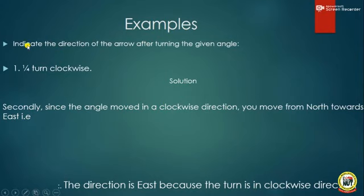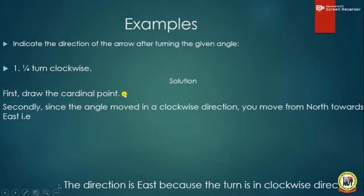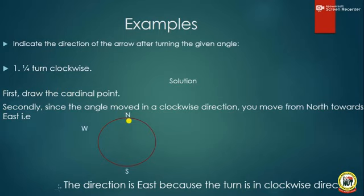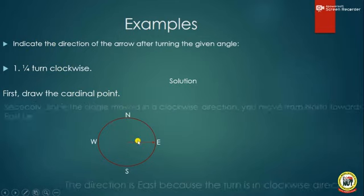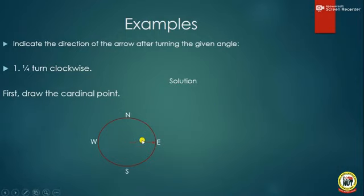Let us look at some examples. Indicate the direction of the arrow after turning the given angle: number one, one-quarter turn in clockwise direction. The first thing you do is draw the cardinal point. Then you move in clockwise direction because the question says one-quarter turn in clockwise direction. We draw the cardinal point — North, South, West, and East. When you move from North to East, that is a quarter turn, and that is in a clockwise direction.